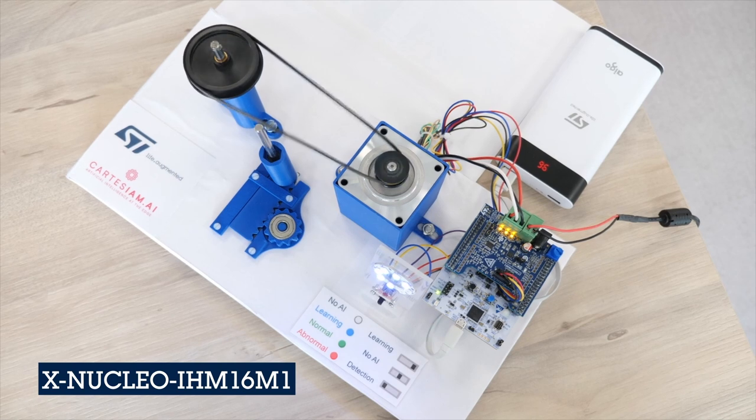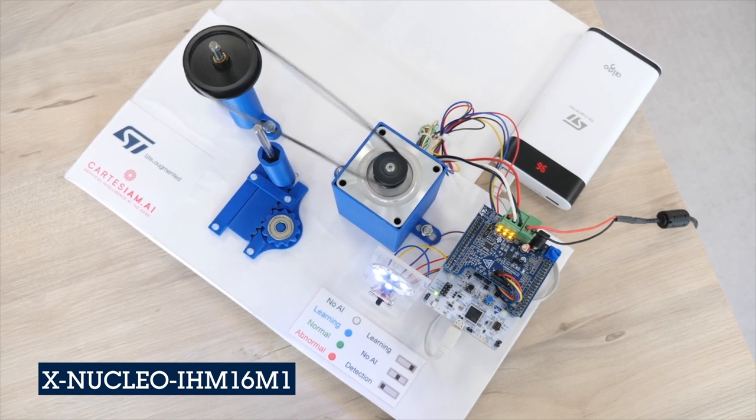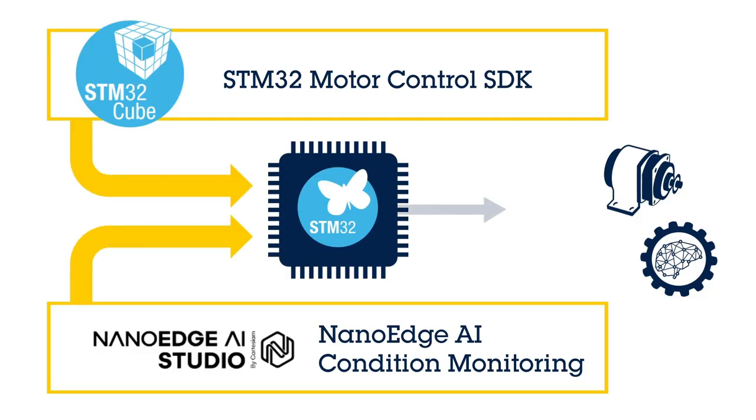The kit also includes a power board X-Nucleo-IHM16M1. The motor control algorithm used to run the motor in the predefined sequence is coming from STM32 motor control SDK and the AI part is coming from NanoEdge AI Studio from Cartesium.